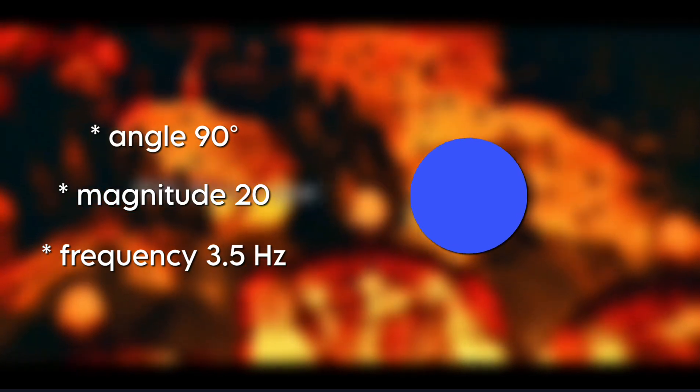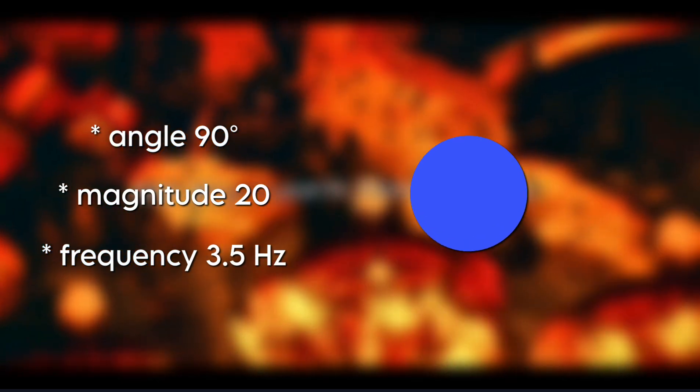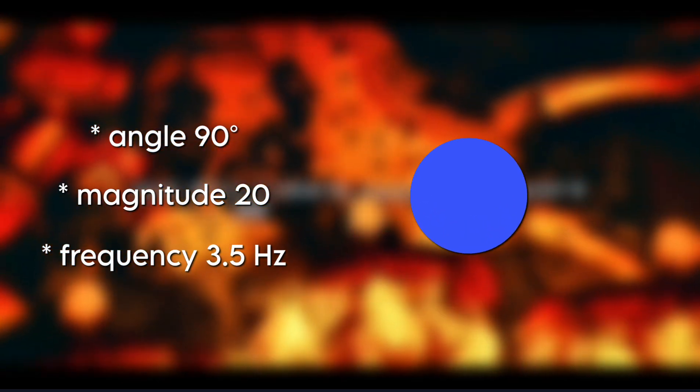Example: for a clean vertical bounce, set angle to 90 degrees, magnitude 20, frequency 3.5. See that? Smooth and reactive.